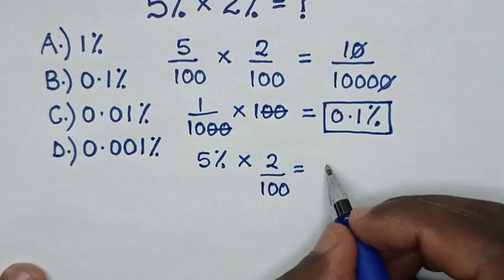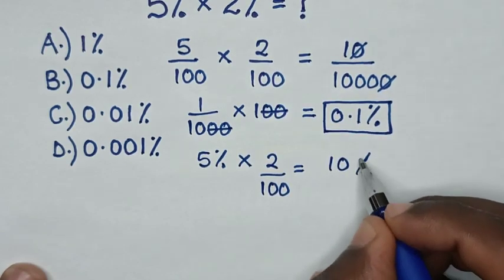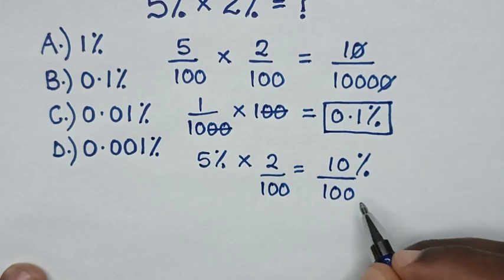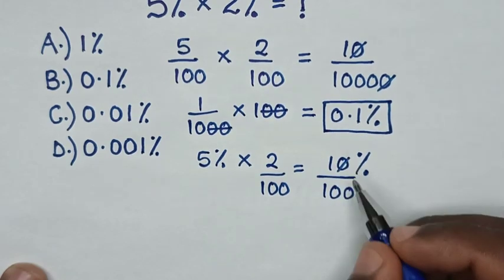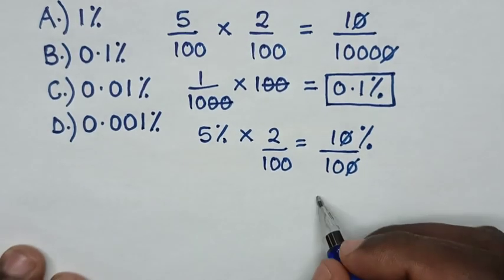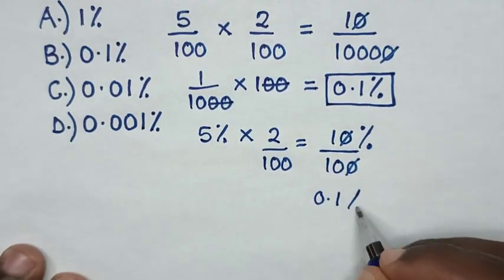to simplify, this 10 will cancel with this 10, so it will be 1 over 10 which is 0.1%.